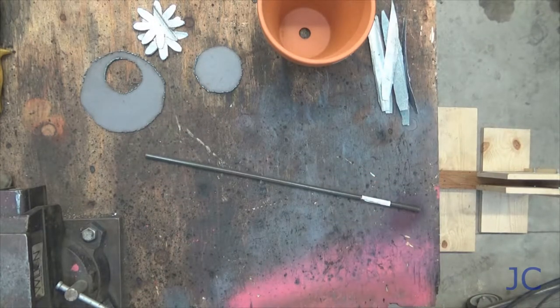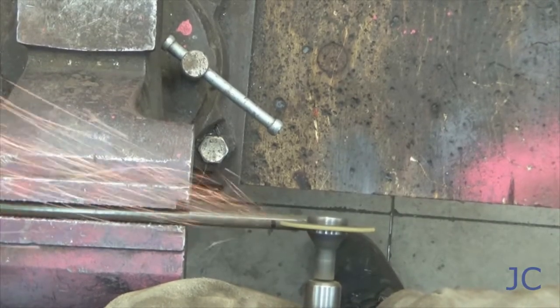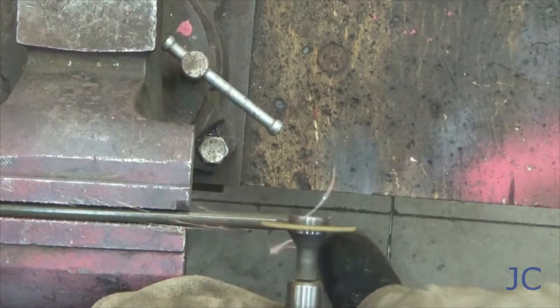Now we've got a piece of brake line that we're going to use for the stem of the flower. This stuff is readily available in any parts store, it's pretty inexpensive. You're going to want to use a die grinder or a saw to cut four slits in the tip of this.